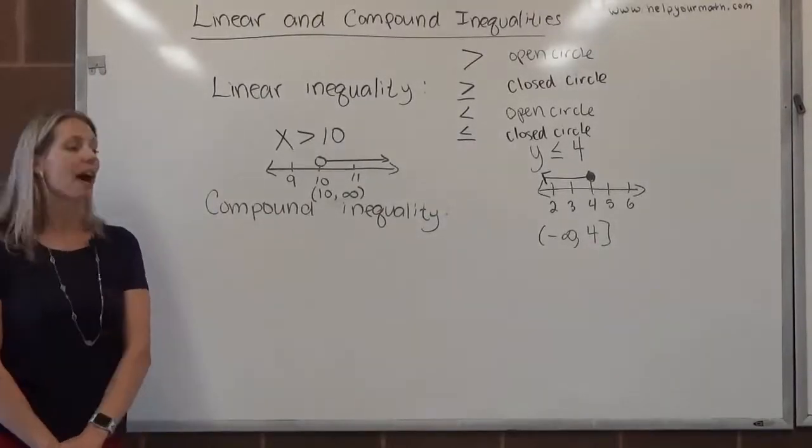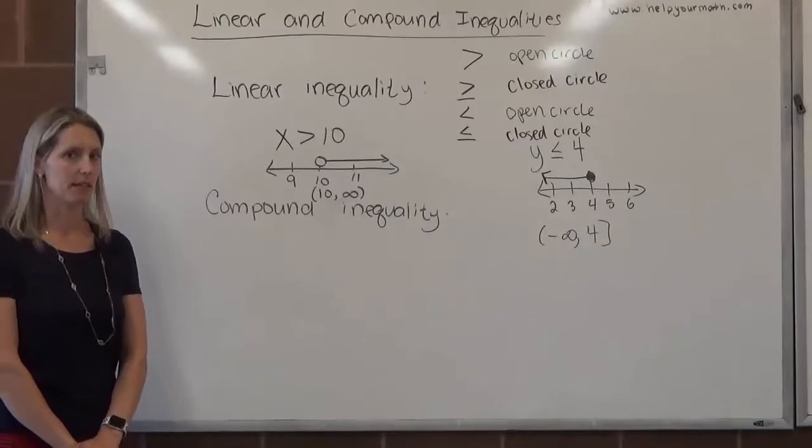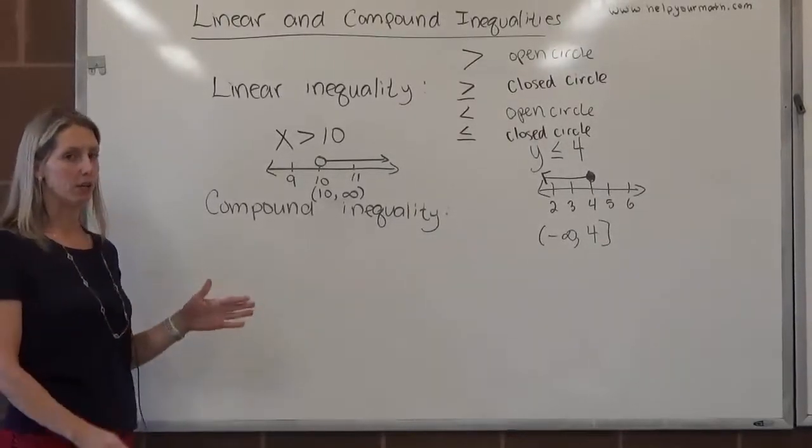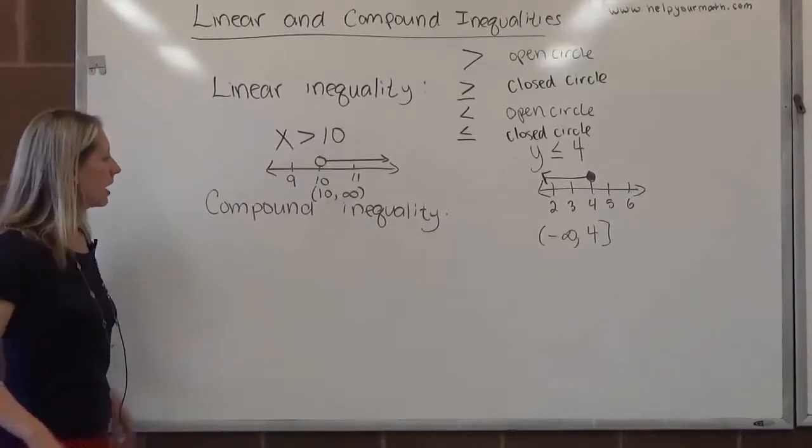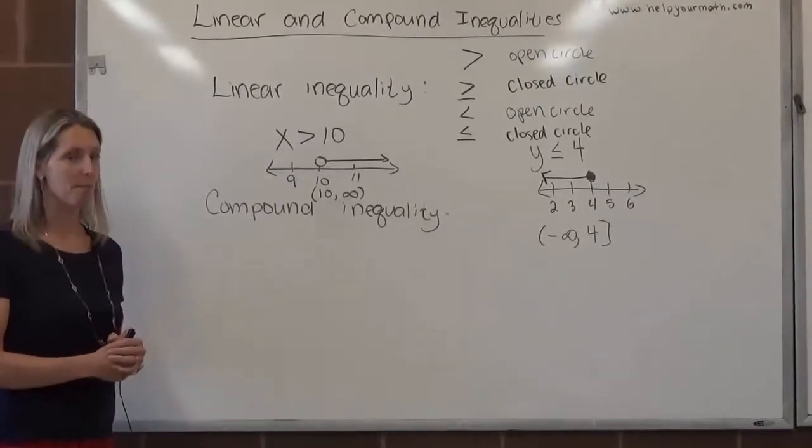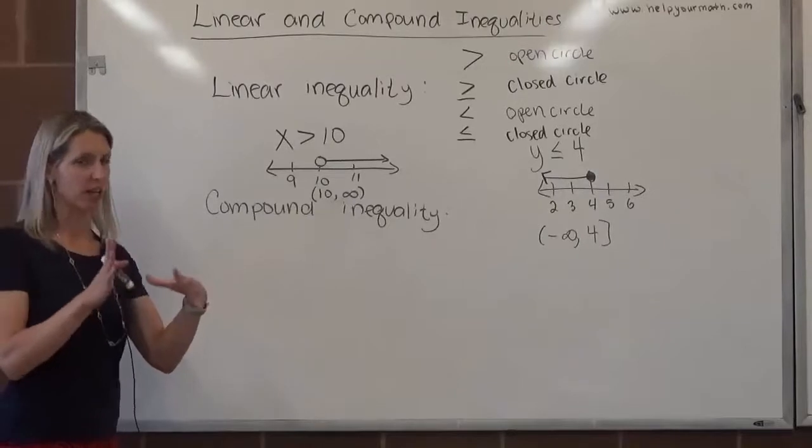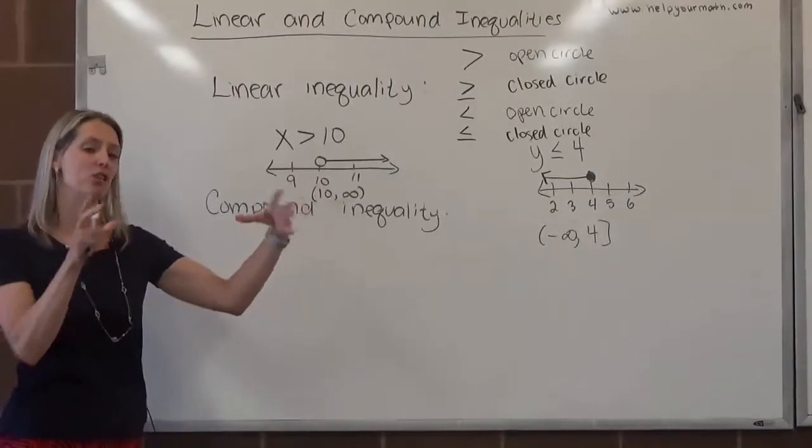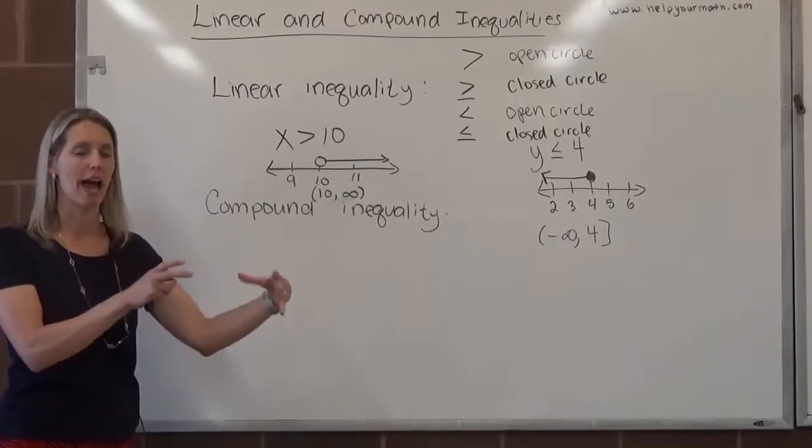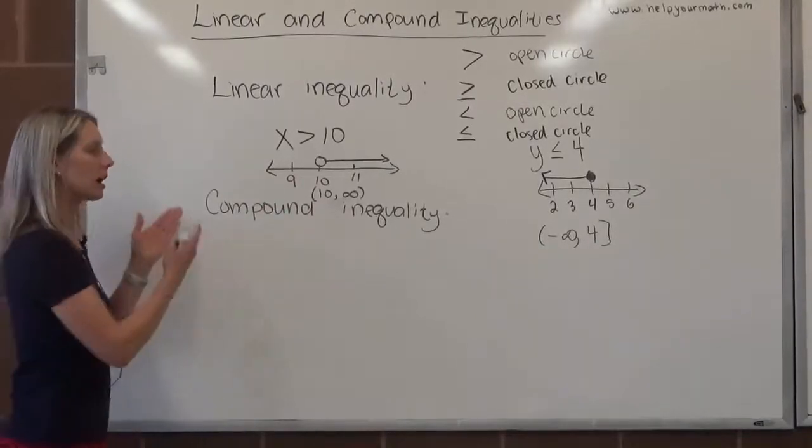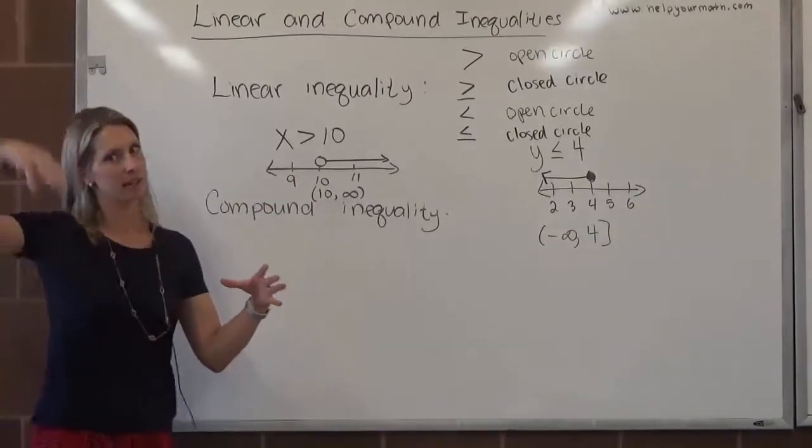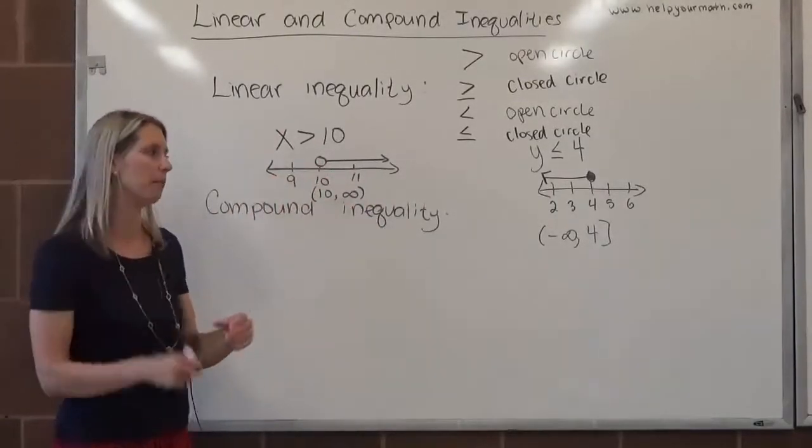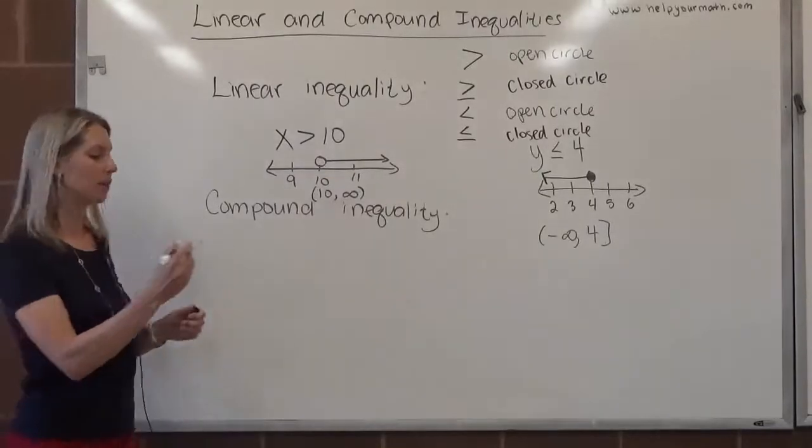There are also compound inequalities that will be discussed in this section. Compound inequalities are the combination of two linear inequalities, and there are two types. Compound generally, like if you think of a compound word, is the combination of two words. Like doghouse is the combination of dog and house. Compound inequality is no different. It's taking this inequality and this inequality and saying they're all part of one problem now.